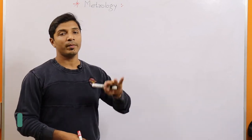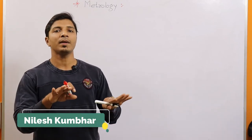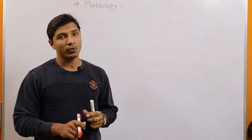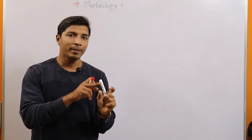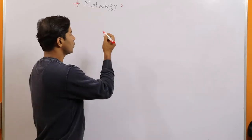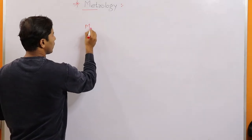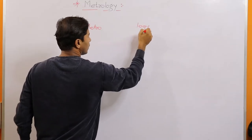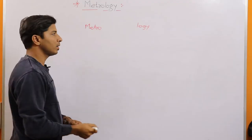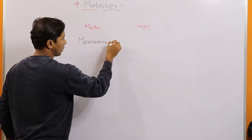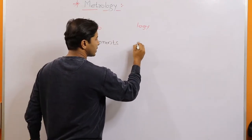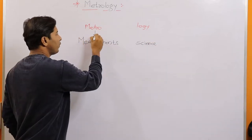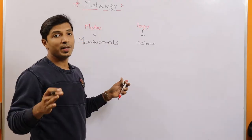Today we will discuss metrology and some basic and fundamental concepts associated with it. The word metrology is made up of two Greek words: metro, meaning measurements, and logi, meaning science. So metrology can be defined as the science of measurements.